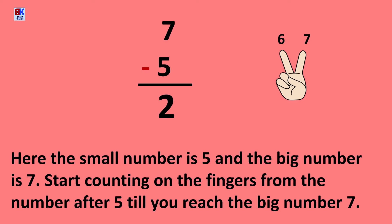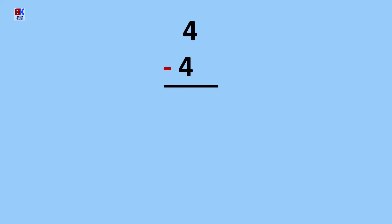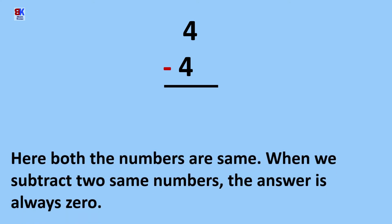One more sum: 4 minus 4. Here both the numbers are the same. When we subtract two same numbers, the answer is always 0.